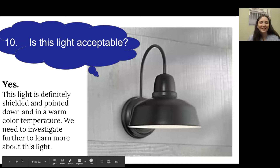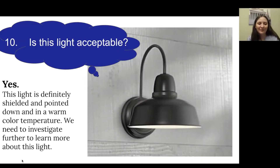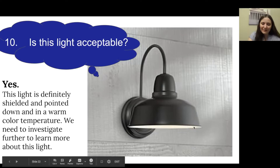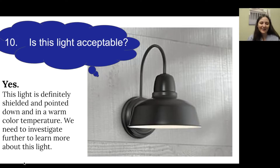And finally, number ten: this light is definitely acceptable. It is shielded and pointed down, so we cannot see the light source — which is what we want in all our lights. We can see a little bit of light coming from underneath and it looks like a warm light. This is definitely acceptable, but we would also need to investigate further to learn more, such as whether it serves a purpose.